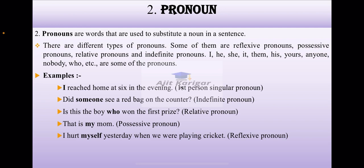The examples in sentence: I reached home at six in the evening. Did someone see a red bag on the counter? Is this the boy who won the first prize? That is my mom. I hurt myself yesterday when we were playing cricket. The bold letters I, someone, who, my, myself are all pronouns used instead of nouns in the sentences.